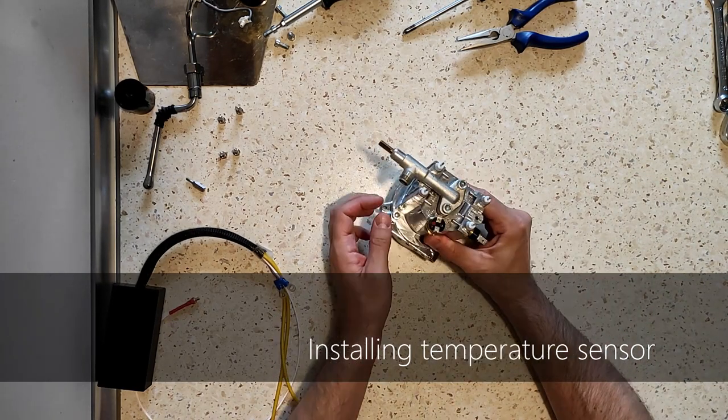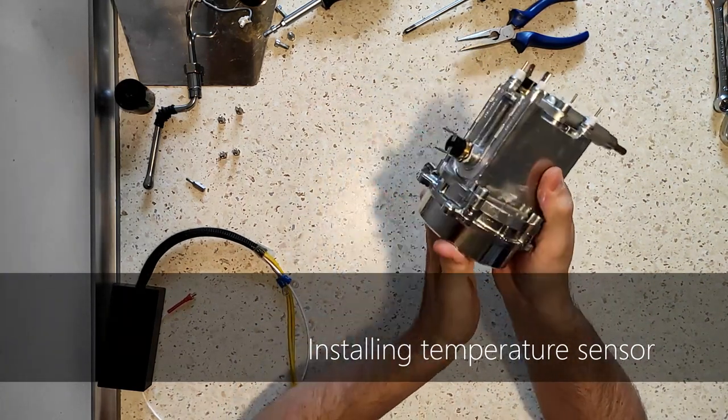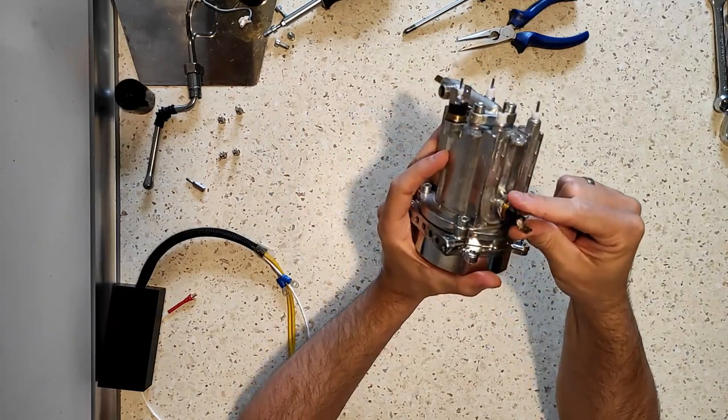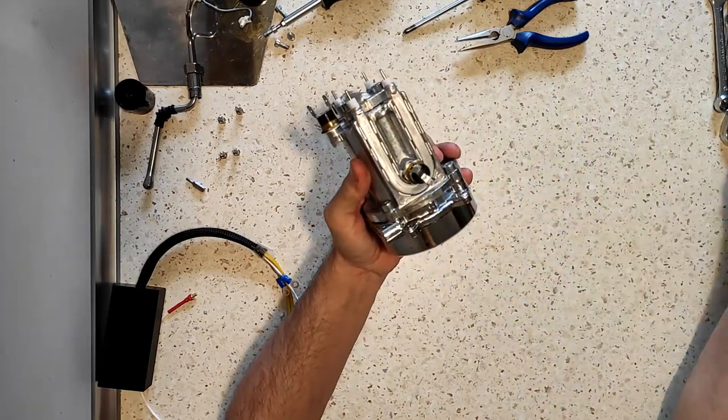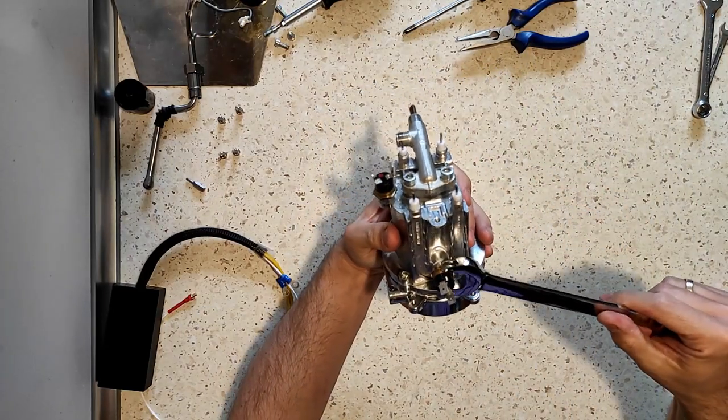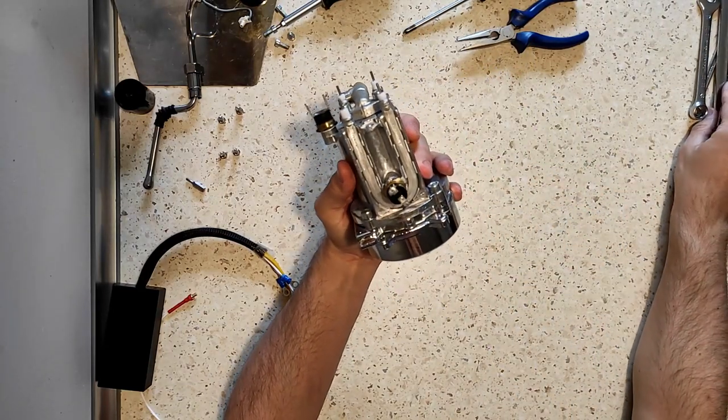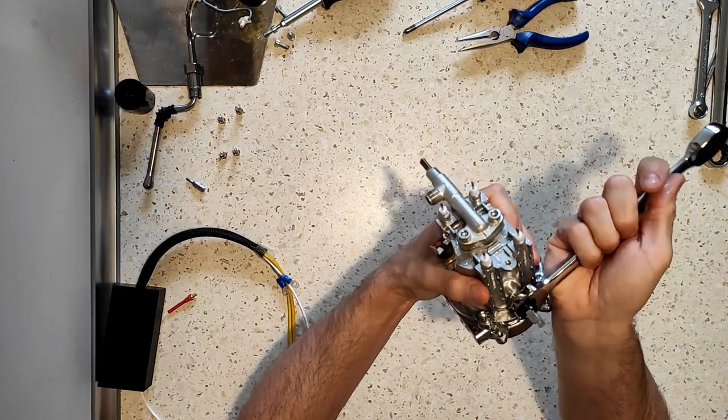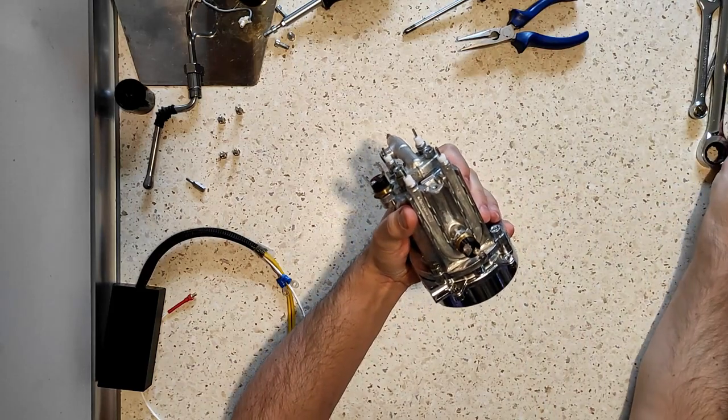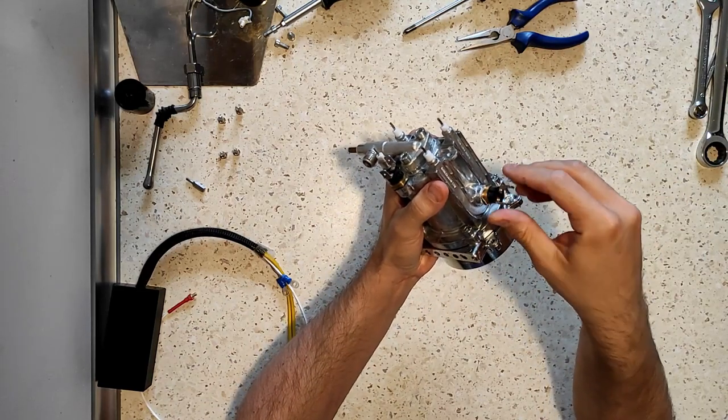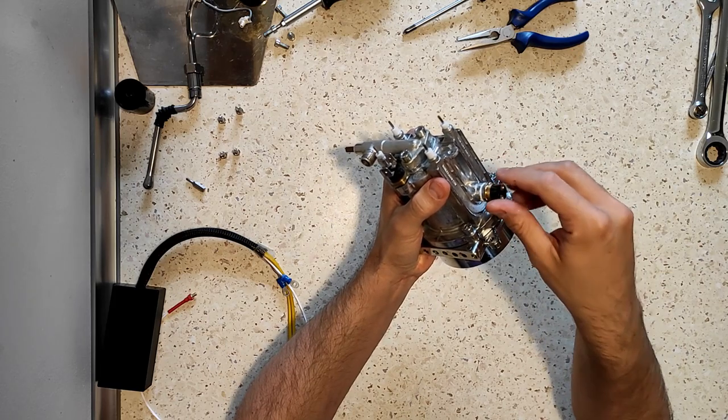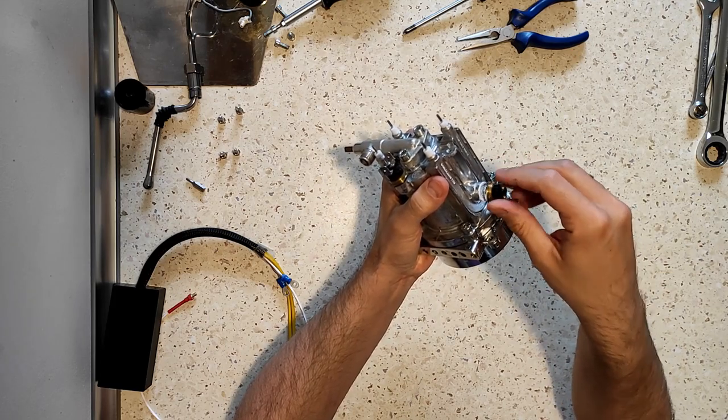You'll notice there are two thermostats. Since I'll be using the PID just for brewing, I need to replace the lower one with the new temperature sensor. It takes a large 17mm spanner to unbolt this, but it is really a tiny M4 threading. Be very gentle and remember, lefty loosey. The boiler is made of aluminum, a very soft material, so I'm always particularly careful when working with small threads in aluminum objects.